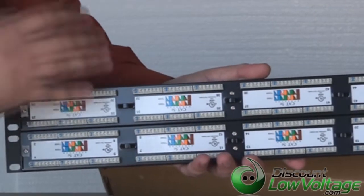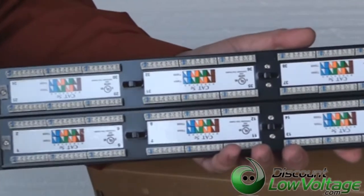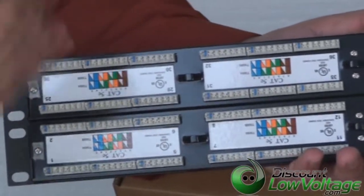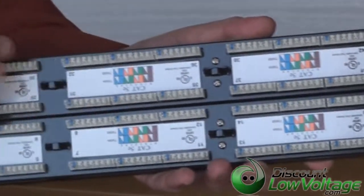One of the benefits about having nice, strong metal patch panels, when you go to punch it down on your 19-inch rack, you won't get a wobble at all, and you'll be able to make a nice clean cut on the 110s.